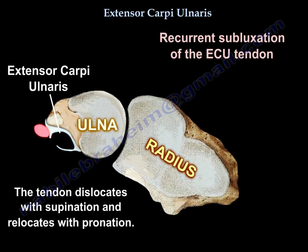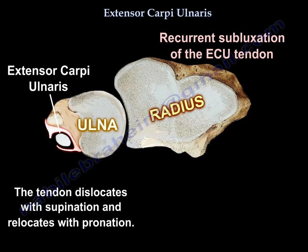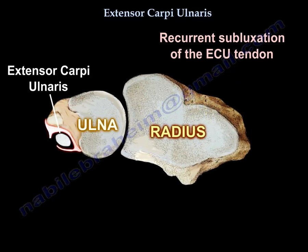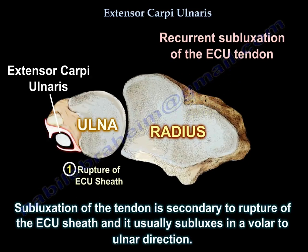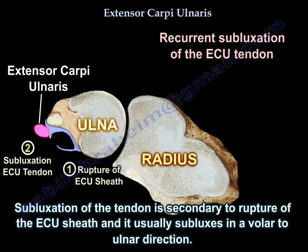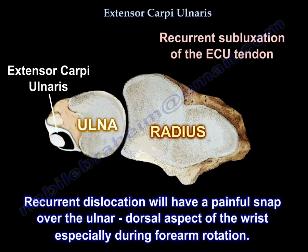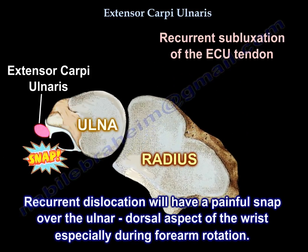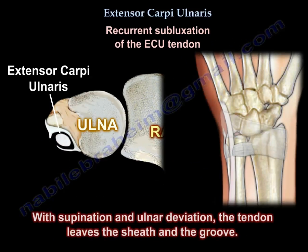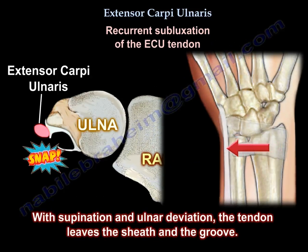The tendon dislocates with supination and relocates with pronation. The subluxation of the tendon is secondary to rupture of the extensor carpi ulnaris sheath and is usually subluxed in a volar to ulnar direction. Recurrent dislocation will have a painful snap over the ulnar dorsal aspect of the wrist, especially during forearm rotation. With supination and ulnar deviation, the tendon leaves the sheath and the groove.